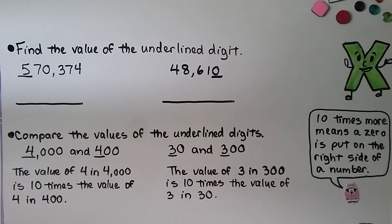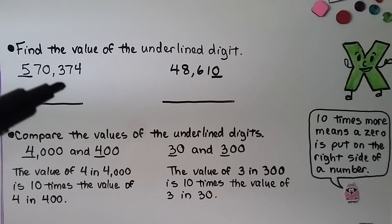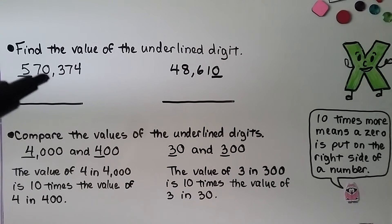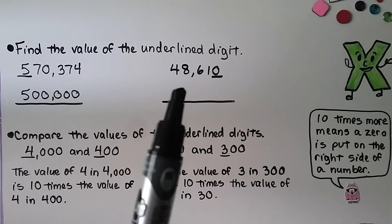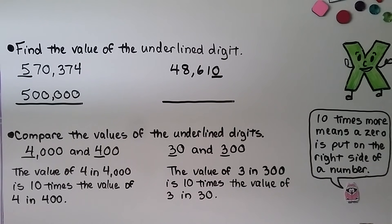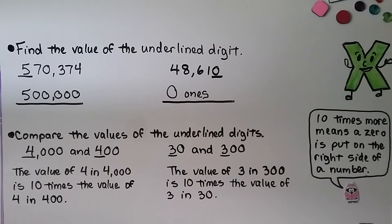Find the value of the underlined digit. We look at the digit that's underlined — we see it's the five. We can write this number into a place value chart, or we can start at the ones, then say tens, then hundreds, then one thousands, ten thousands — that must be five hundred thousand. Now look at the underlined digit in the next number; it's the zero. The zero is in the ones place, which means we have zero ones — it's equal to zero, representing zero ones.